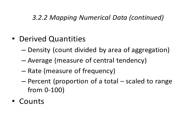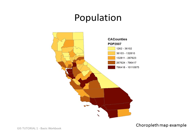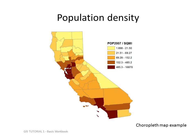Counts, by contrast, are simply direct counted numbers that have not been derived in any way. Here's a map that just shows counts — the total population without manipulating the data, in this case the population of California by counties. Here's one where the data have been derived and now we look at population density — the number of people per square mile at the county level.